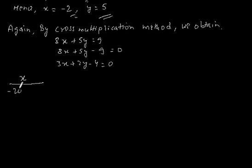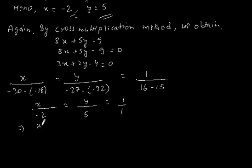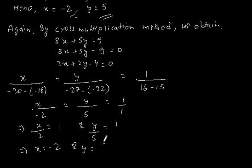By the cross multiplication method, we will get x by (minus 20 minus (minus 18)) is equal to y by (minus 27 minus (minus 32)) is equal to 1 by (16 minus 15). This gives x by minus 2 is equal to y by 5 is equal to 1 by 1. This implies x is equal to minus 2 and y is equal to 5.